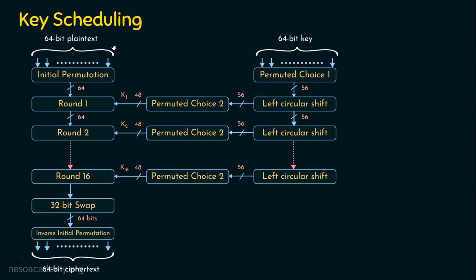What we are going to learn in this presentation is key scheduling. The right-hand side part of the diagram handles key scheduling, while the left-hand side deals with the encryption process. The original key used by DES is a 64-bit key, and this 64-bit key is fed into the Permuted Choice 1 function, which converts it into a 56-bit key. This 56-bit key is then given to the left-circular-shift function, which after permutation produces a 48-bit round key.